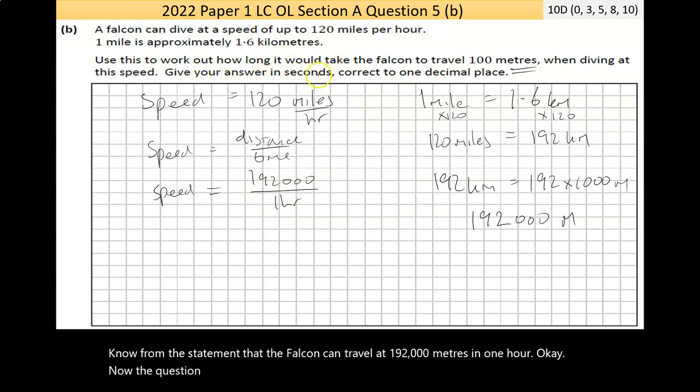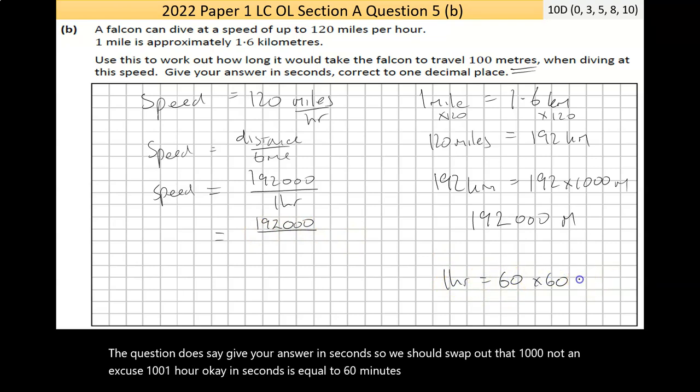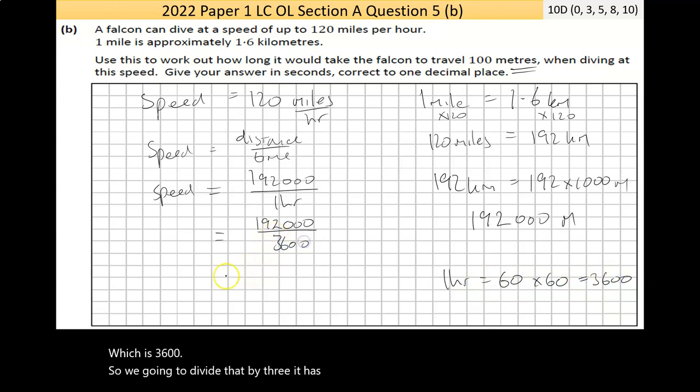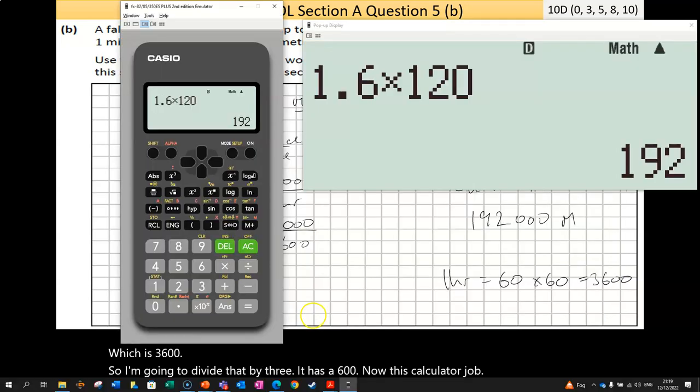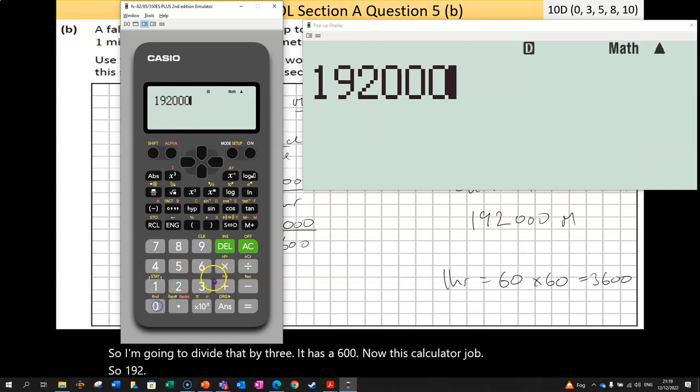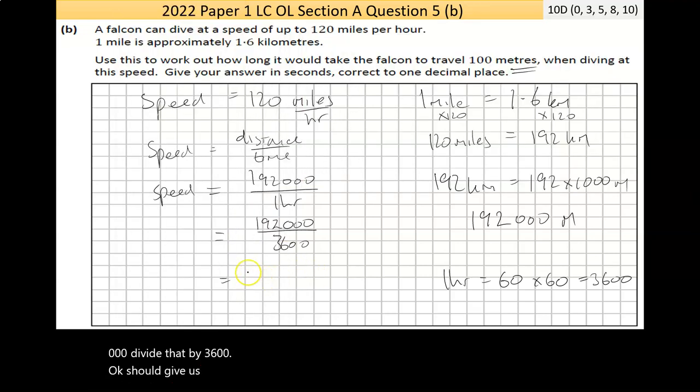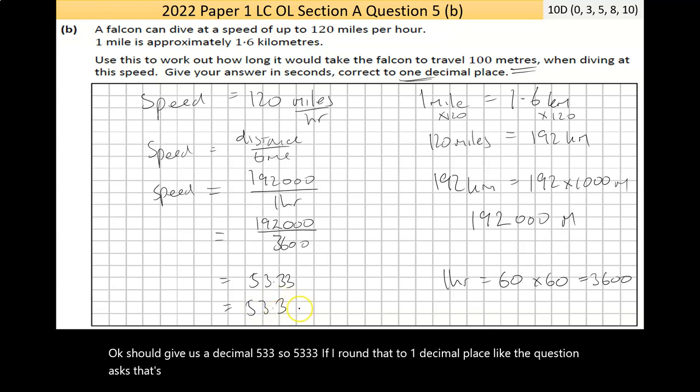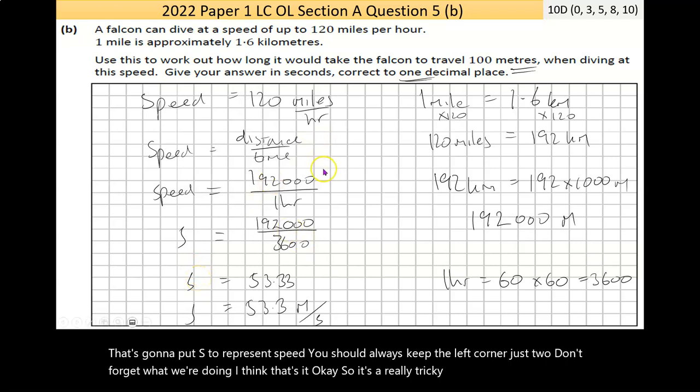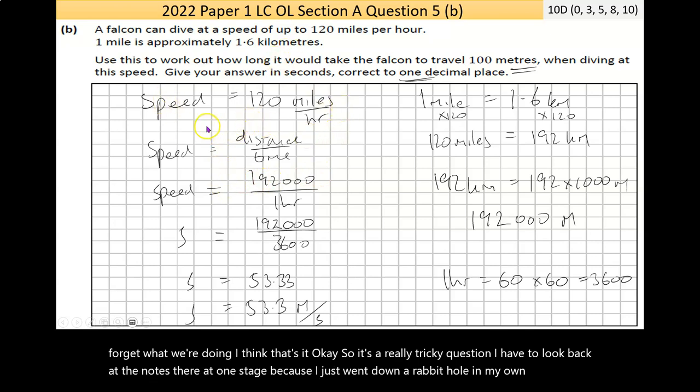Now, the question here is going to meters. So let's convert that to meters. 192 kilometers is equal to 192 × 1000 meters, that's 192,000 meters. Now we know that speed is equal to distance over time. We know from the statement that the falcon can travel 192,000 meters in one hour. Now, the question does say give your answer in seconds. So one hour in seconds is equal to 60 minutes × 60 seconds, which is 3,600.